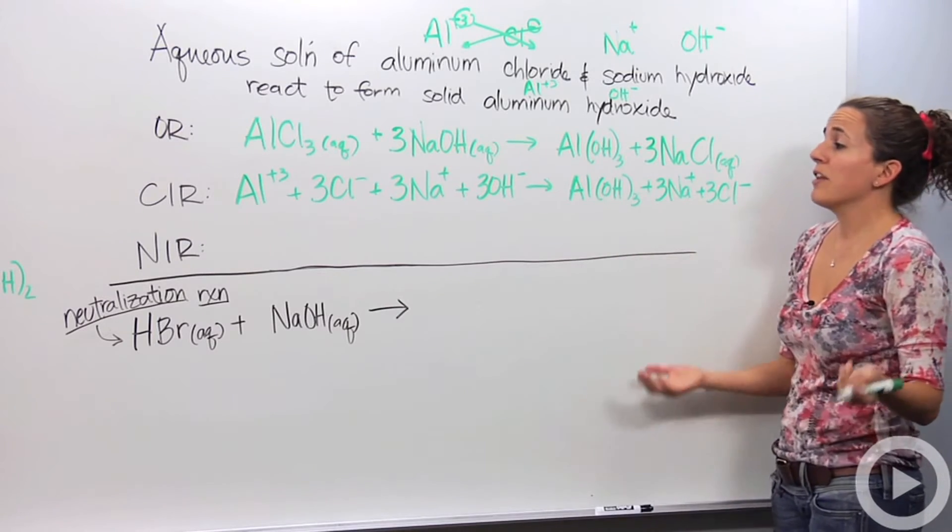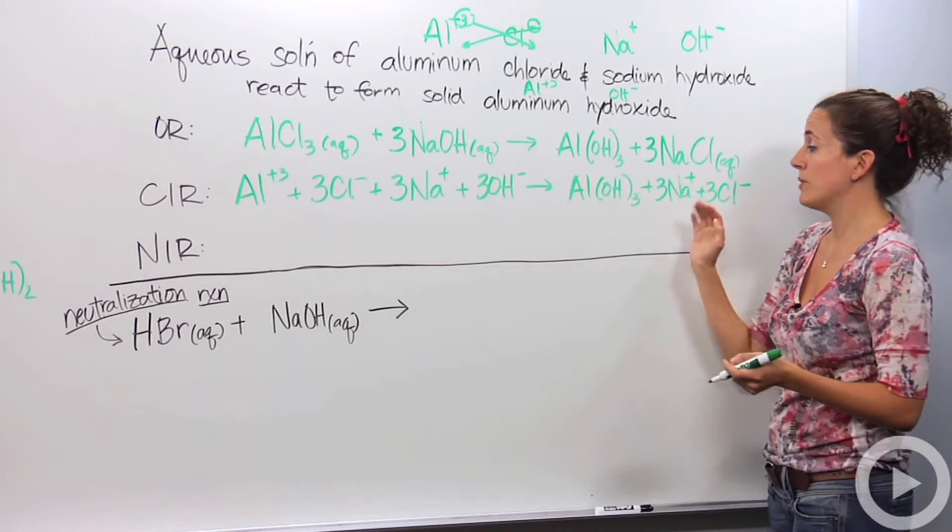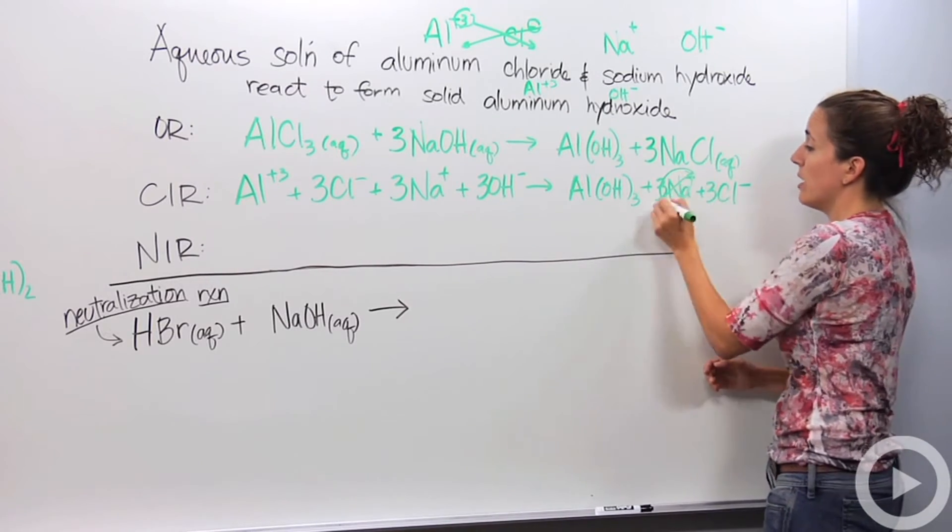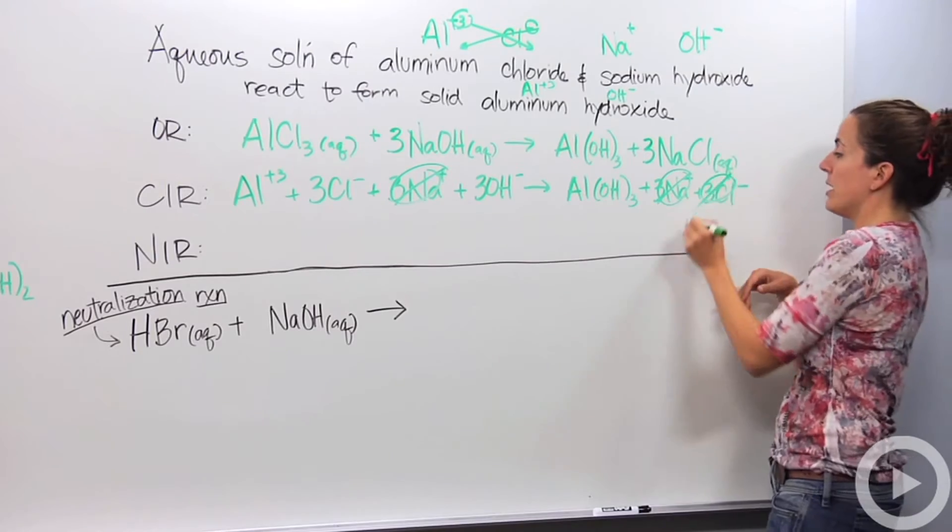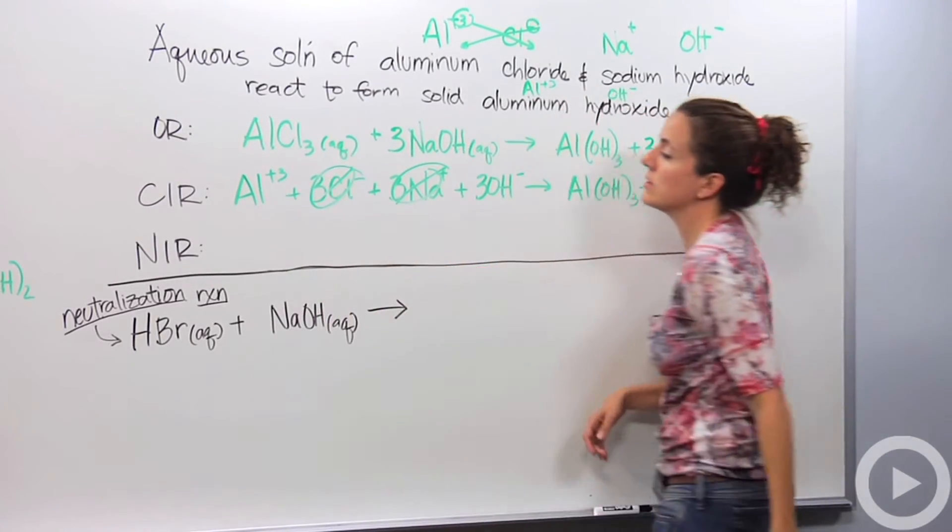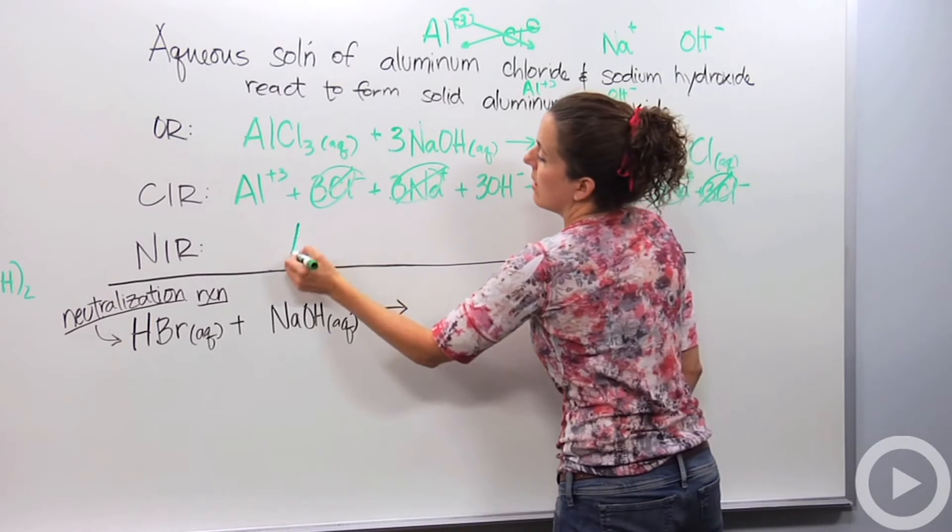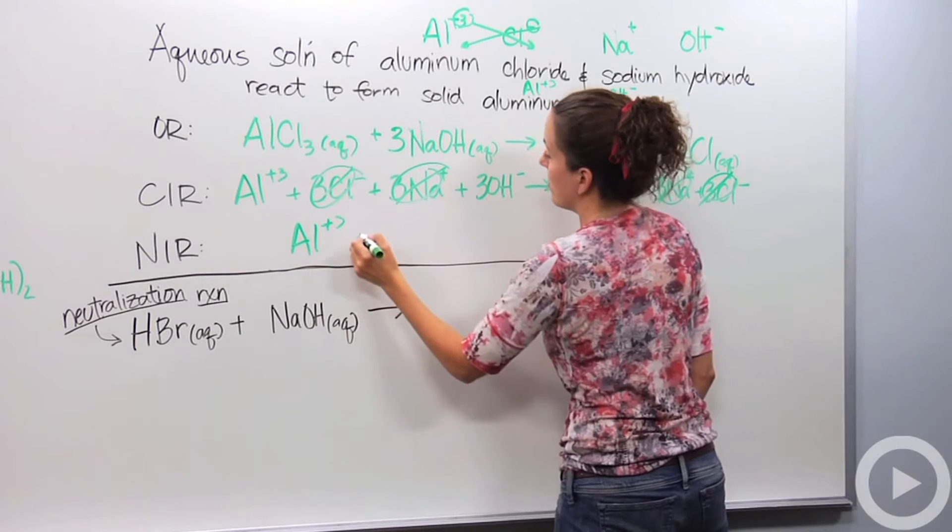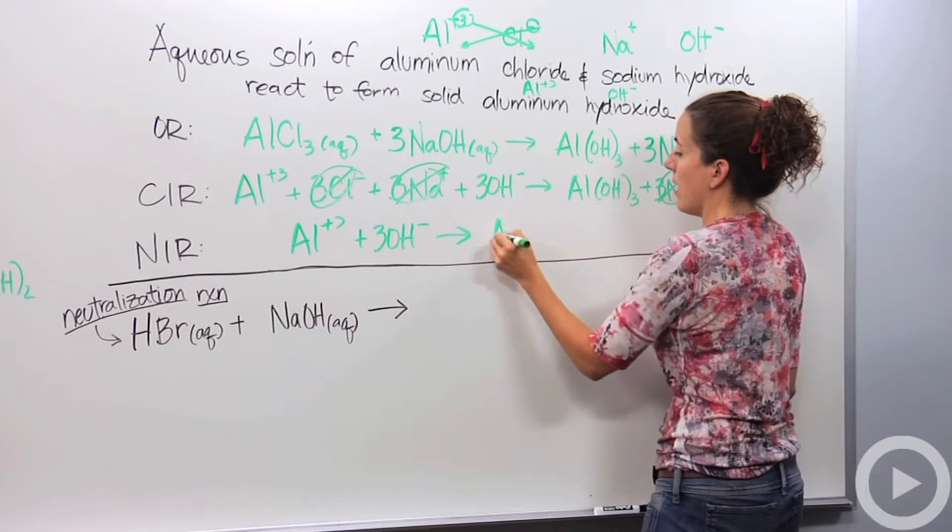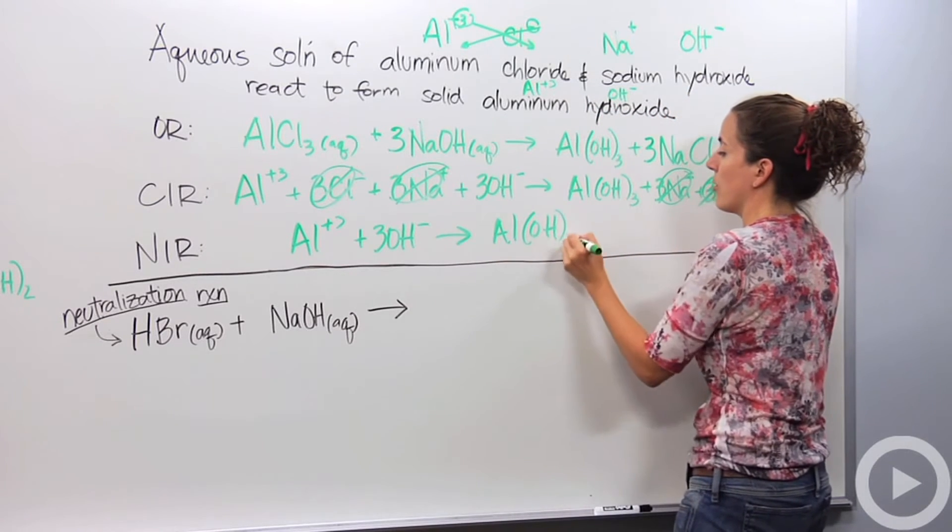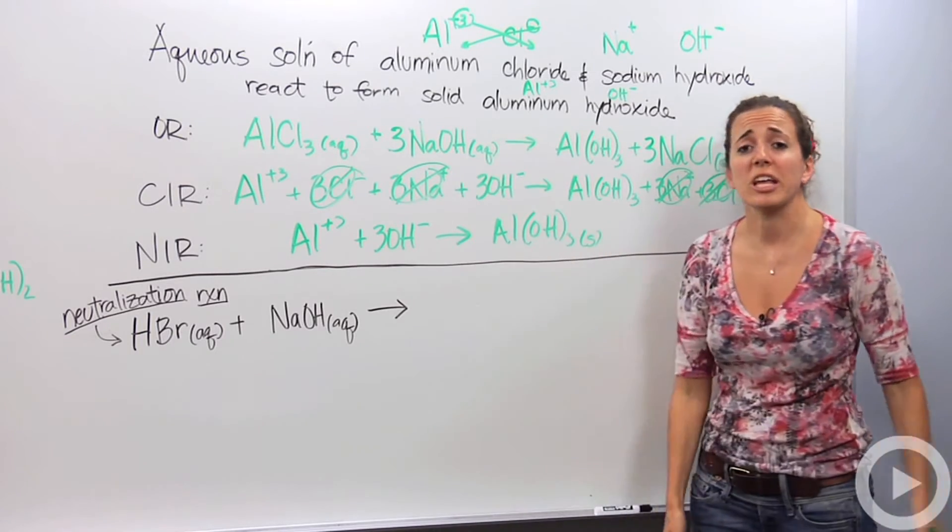Now we have to find our spectators again. Which ones are the same on both sides? I have three Na's over here and three Na's over here - cross those guys out. Three chlorides here, three chlorides here - cross those guys out. Now we're left over, this is our net ionic equation. Al plus 3, plus 3 OH minus, yields Al(OH)3. This is our solid, so precipitate. It's completely balanced.